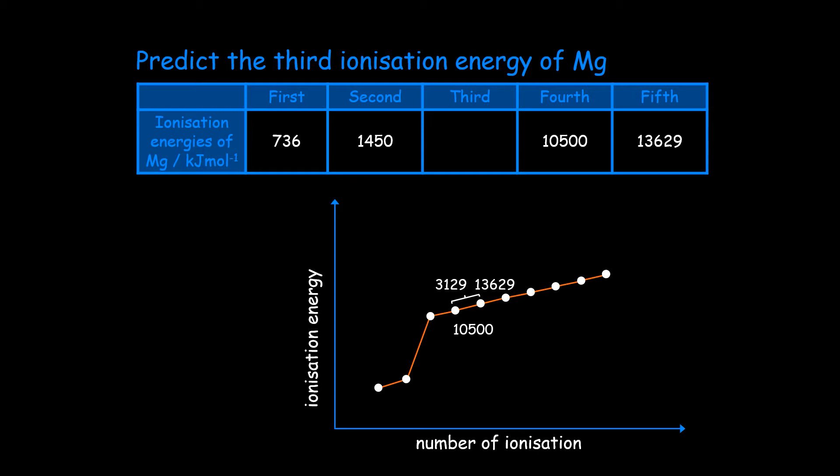So there should be a difference between the third and fourth ionization energy of also 3,129. So you're going to do 10,500 minus 3,129 gives 7,331.